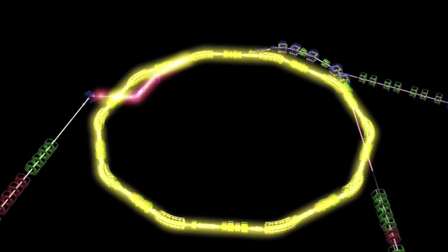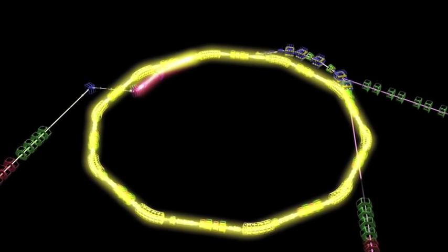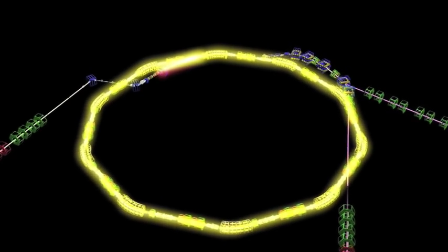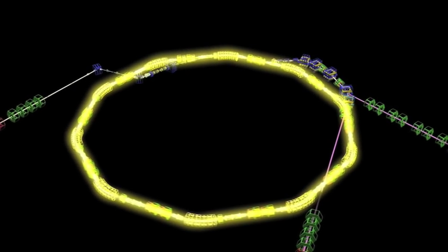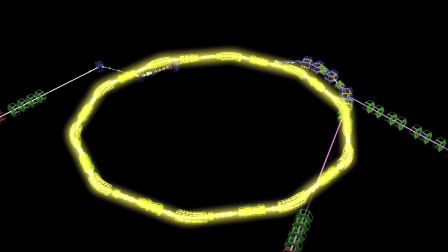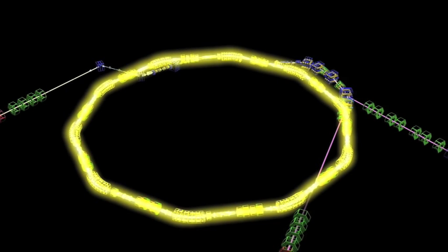The synchrotron is made up of ten sections, each consisting of a bending magnet to keep the protons on their circular path and five focusing magnets. The total distance around the synchrotron is 163 meters.